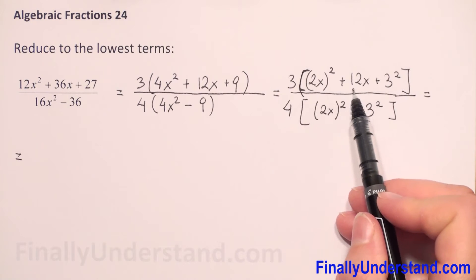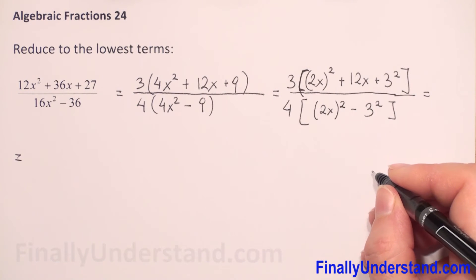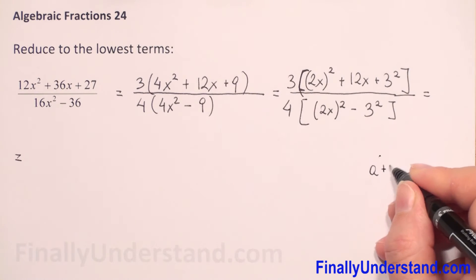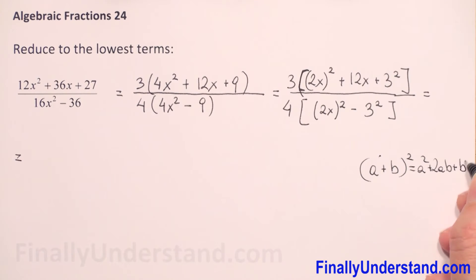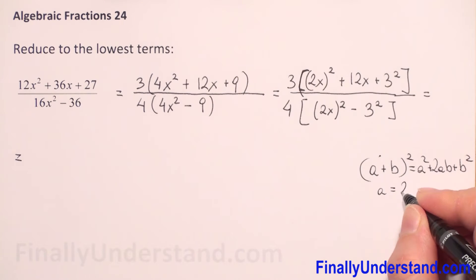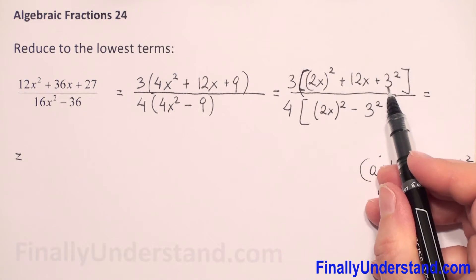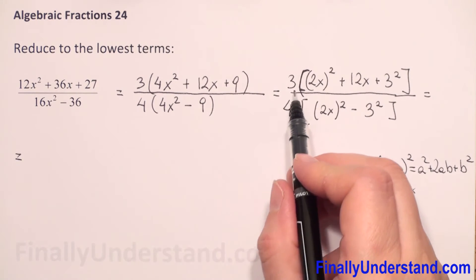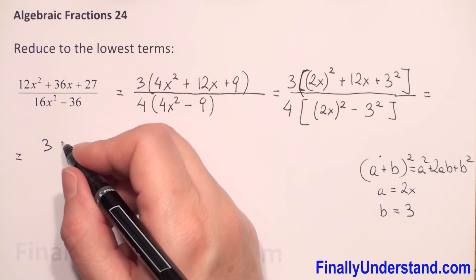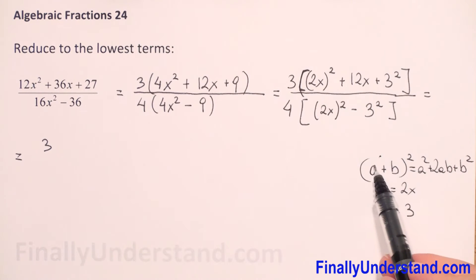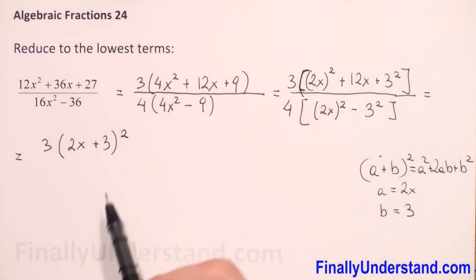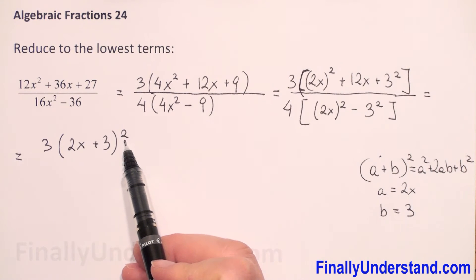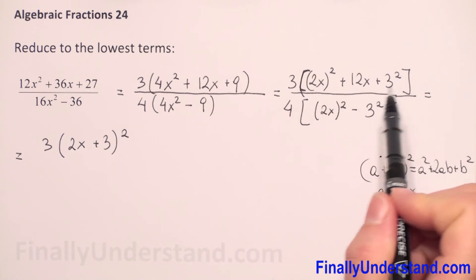We have here a square of a binomial. The formula is: (a + b)² = a² + 2ab + b². In our example, a is equal to 2x and b is equal to 3. So we copy the 3, and whatever we have in brackets we can change to (2x + 3) to the second power. If you raise (2x + 3) to the second power you get exactly the same expression we had at the beginning.